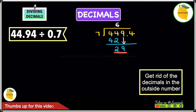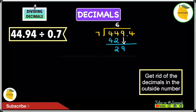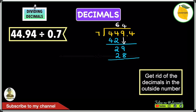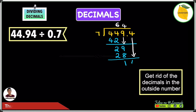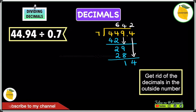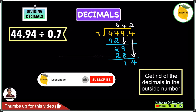Now we have 29. Does 7 go into 29? Yes, it does — it goes 4 times because 7 times 4 is 28. Write the 4, then write 28 and do 29 minus 28, which gives 1. Next, bring the 4 down and write it next to the 1 to give 14. Does 7 go into 14? Yes, it goes 2 times. Write the 2 on top. So far we've got an answer of 642.